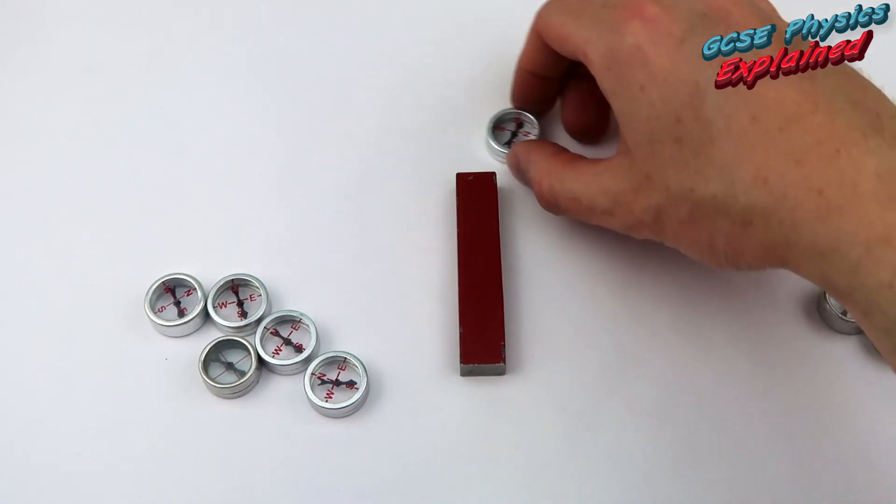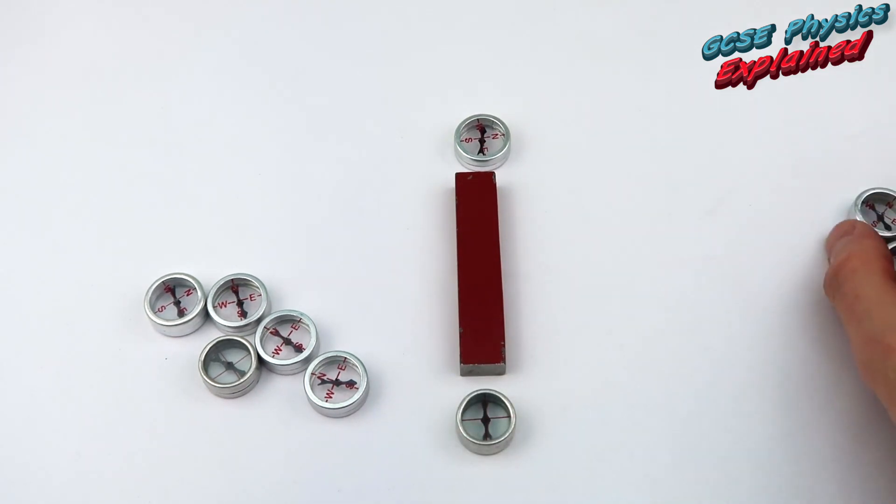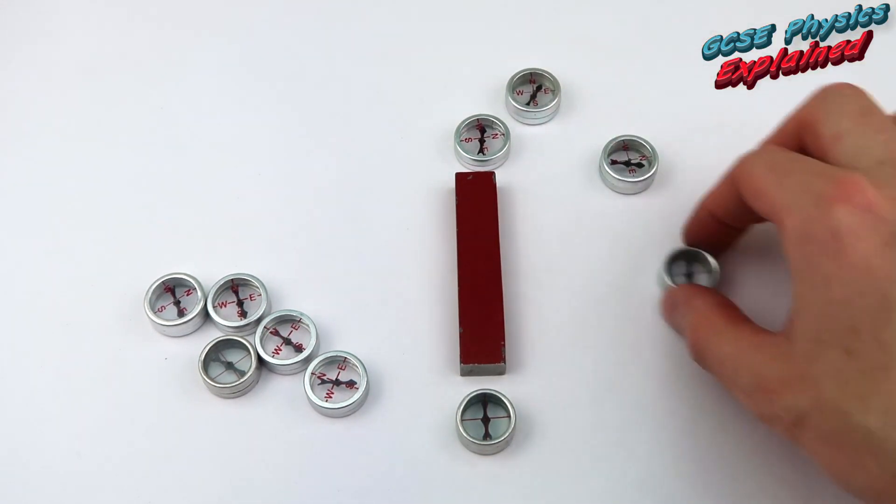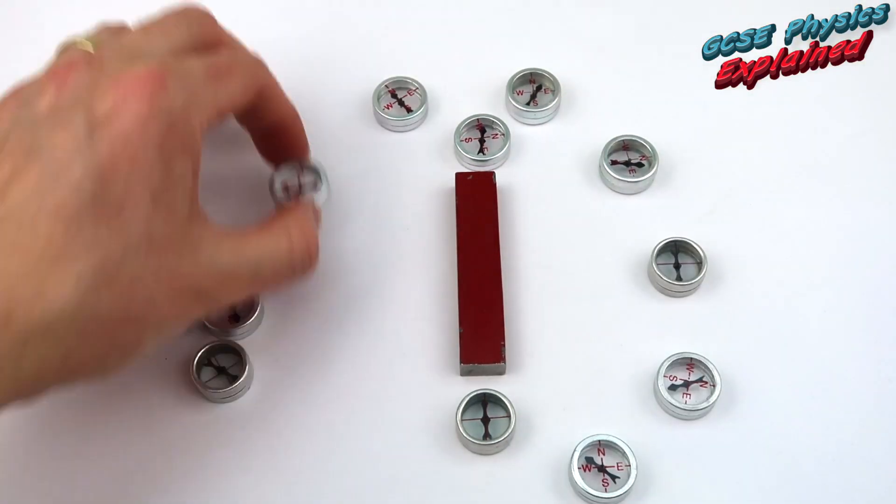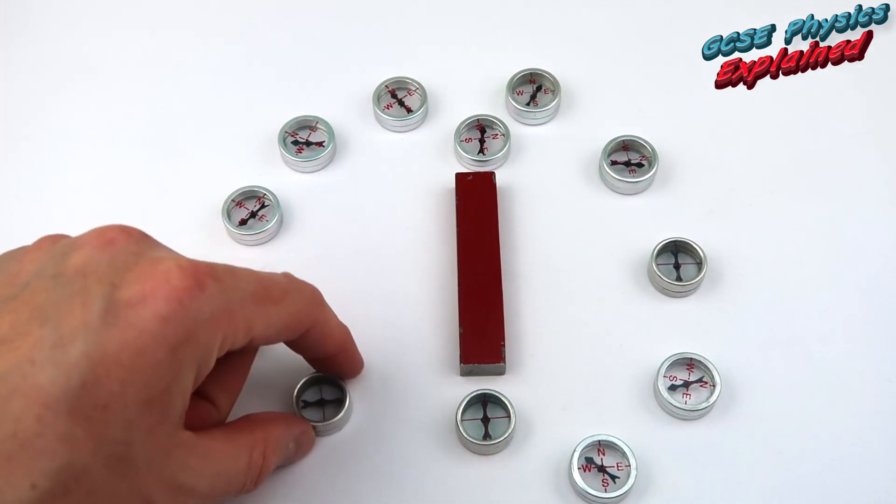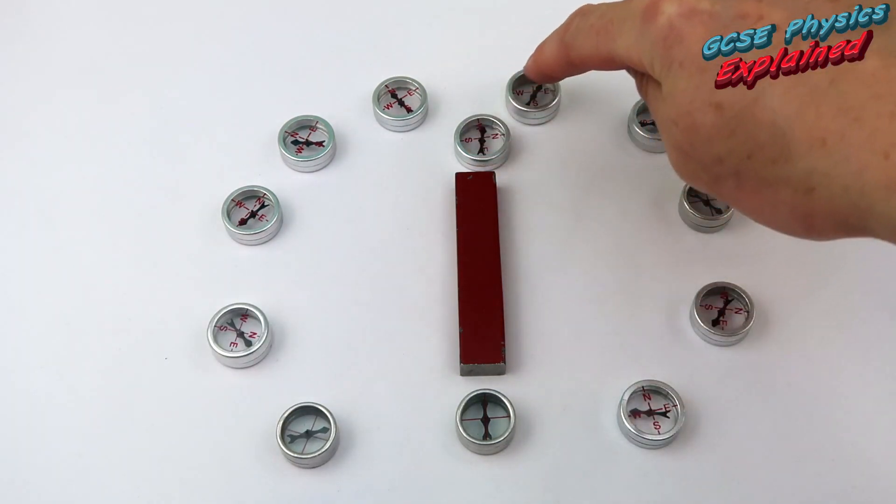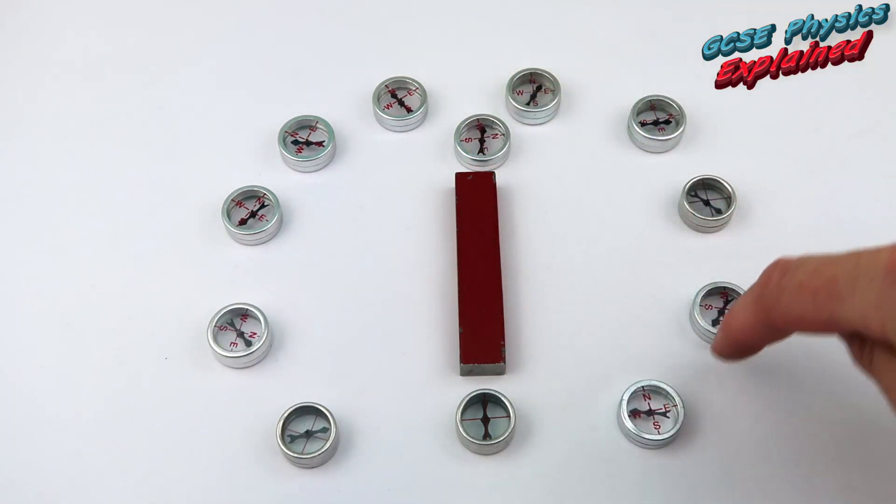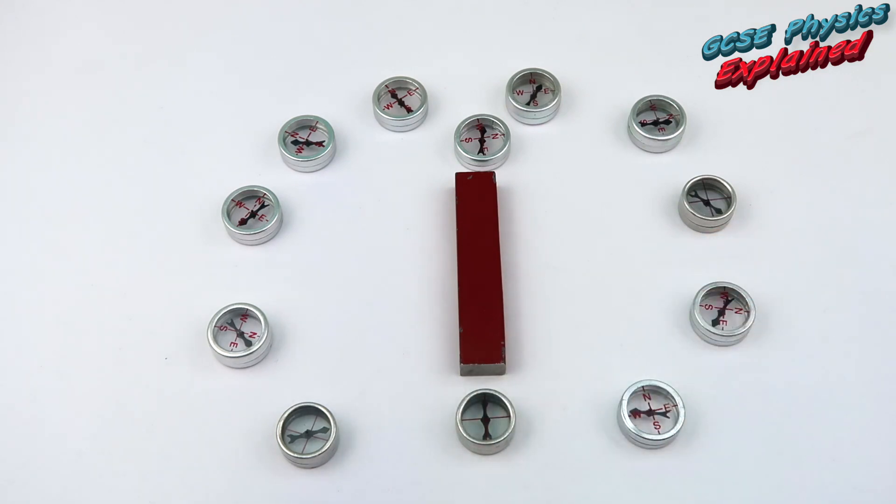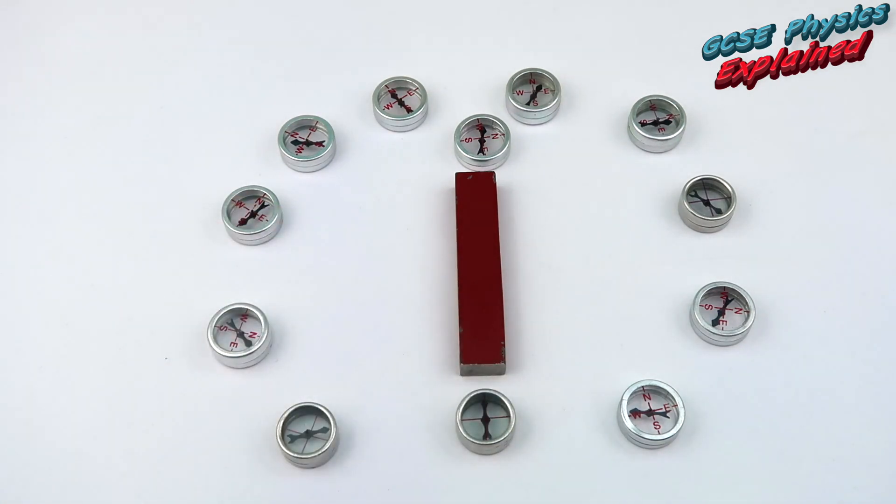So all you do is you place compasses around the magnet. On either side, you can see that the compasses are turning. They're pointing upwards and they're pointing round here like that. They're going into the South and they're doing that on both sides. Coming out the North, coming round like this and going into the South.